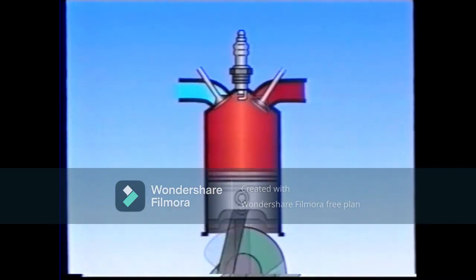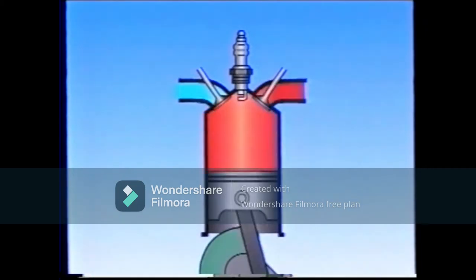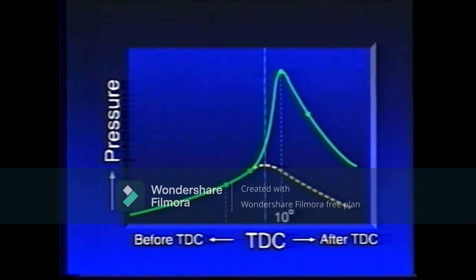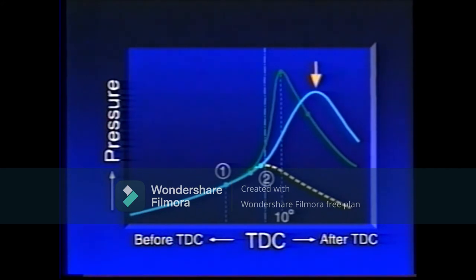So let's think about what happens if the engine speed increases. Because the ignition delay time between points one and two is constant, the angle through which the crank rotates in the same period of time increases. The point at which maximum pressure is reached lags behind ten degrees, so in this case it is necessary to advance the ignition timing.